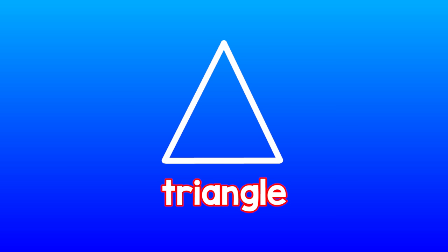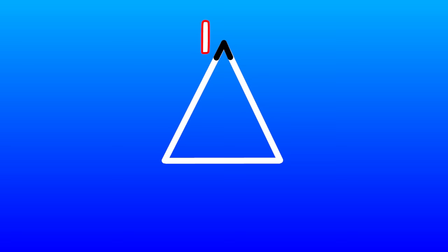Let's move and count the vertices of a triangle. 1, 2, 3. A triangle has 3 vertices and 3 sides.